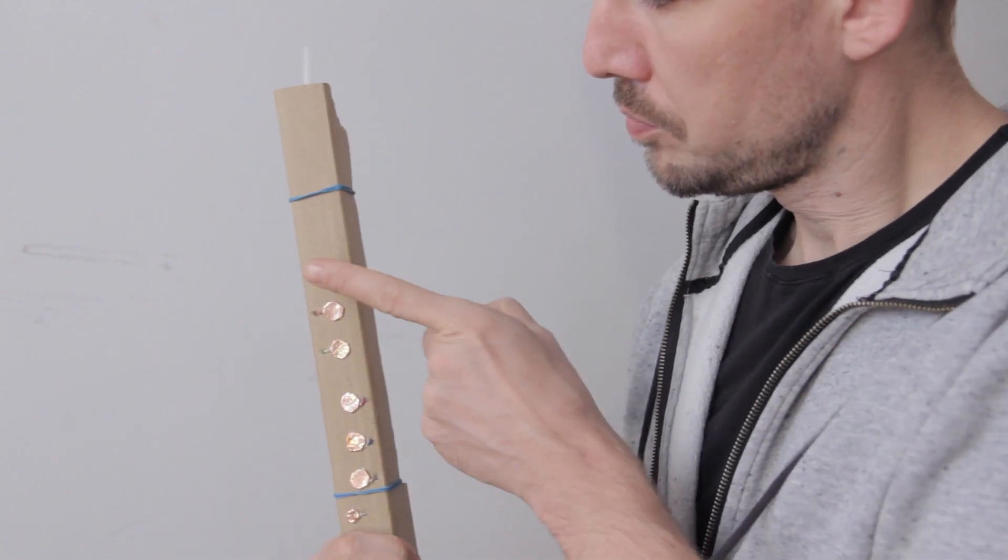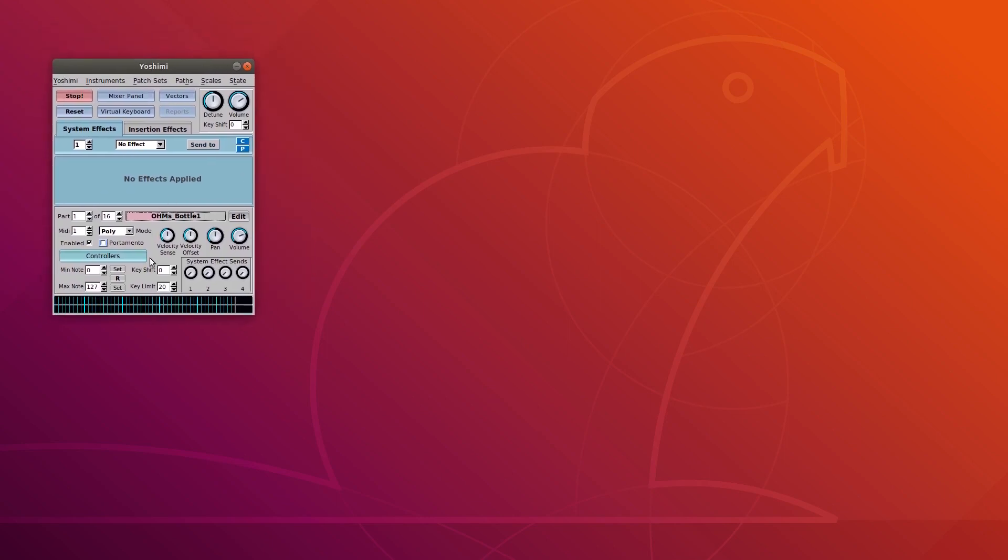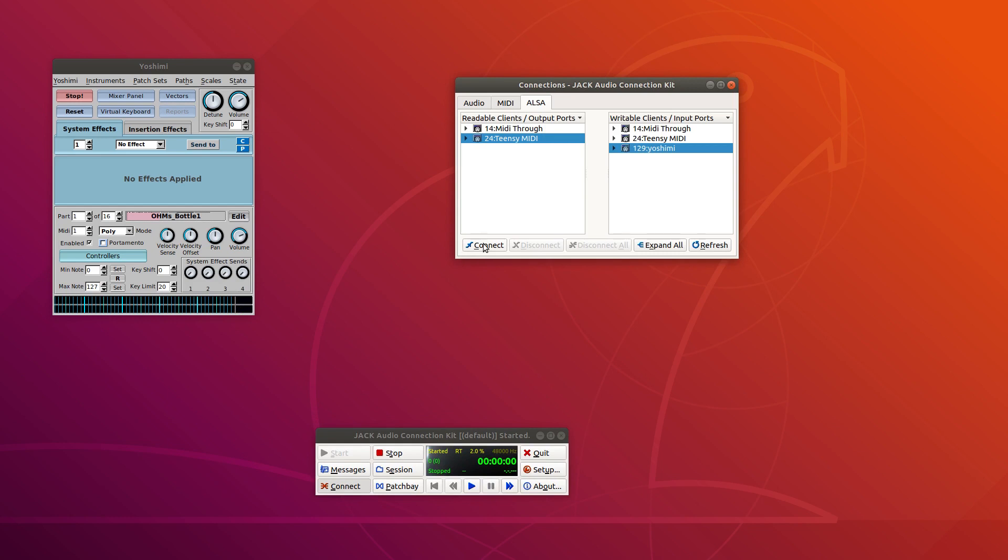Then I calibrate the instrument by holding down the calibration button while I activate all the other sensors one by one. Then I open up the Yoshimi synthesizer, connecting everything through jack, and now I'm ready to make some noise.